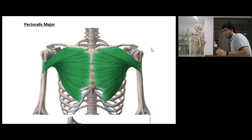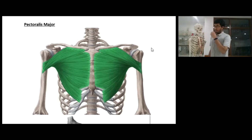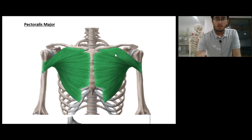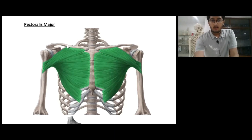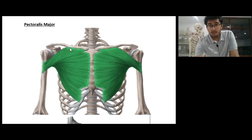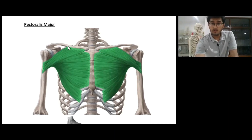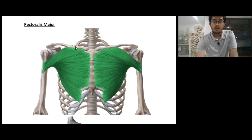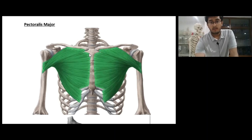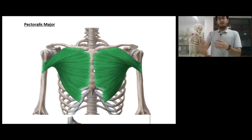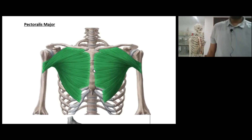This muscle has an origin and insertion — actually it has multiple origins. The pectoralis major is coming from the clavicle, so it has a clavicular part as origin, and it also has a sternal part. You can see all of the muscle fibers are actually terminating on the humerus.